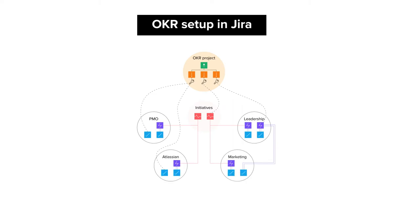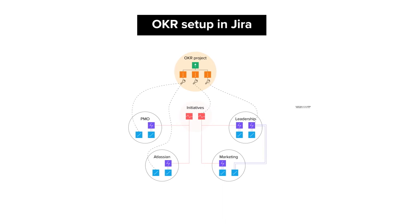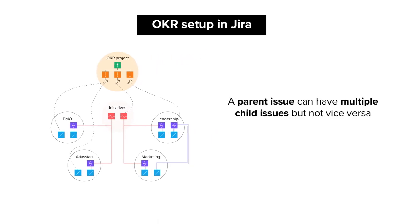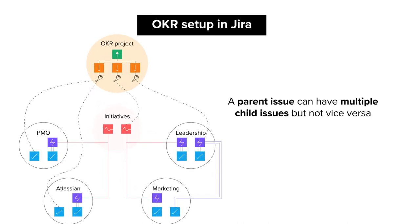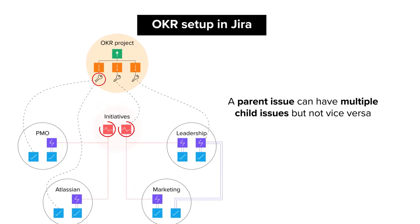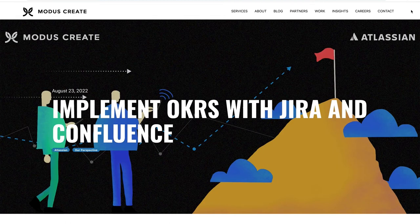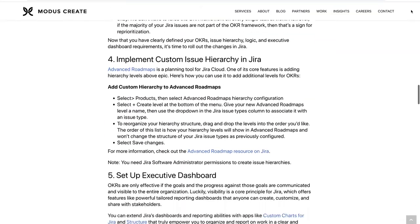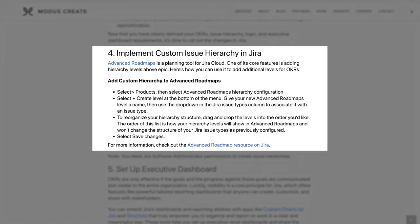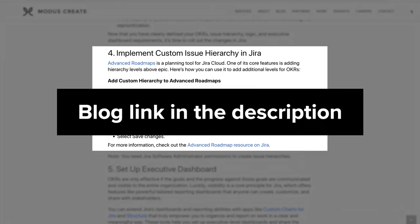You also need to define the hierarchy logic — that is, what rules govern the relationship across different issue levels. Note that a parent issue can have multiple child issues, but not vice versa. For example, a key result can have multiple initiatives, but an initiative can only have one key result. This is a standard rule across all OKR implementations. Our blog goes over one additional step about how to implement custom issue hierarchy in Jira, so be sure to check that out.